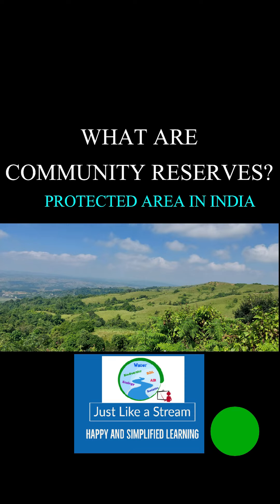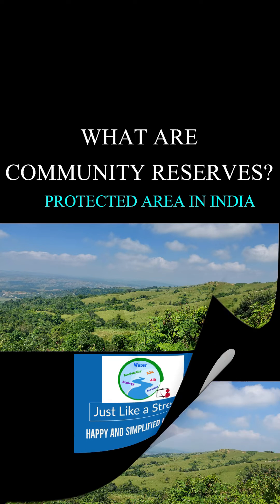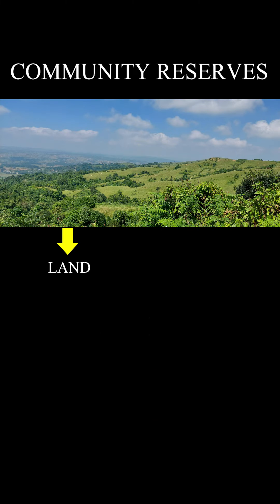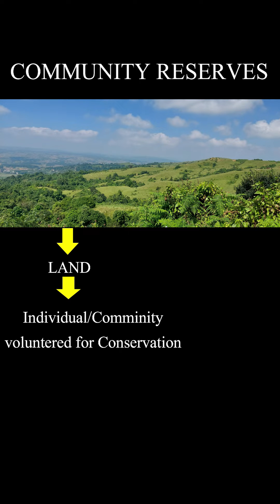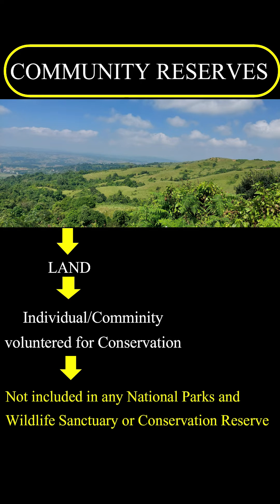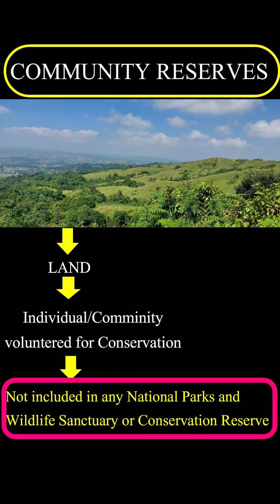Community reserves are one of the four categories of protected area described under the Wildlife Protection Act 1972. When an individual or community volunteers land owned by them towards the conservation of wildlife and its habitat, the state government declares these areas as protected, called community reserves. Community reserves do not comprise or fall within a national park, wildlife sanctuary, or conservation reserve.